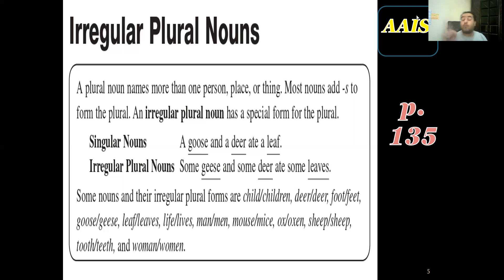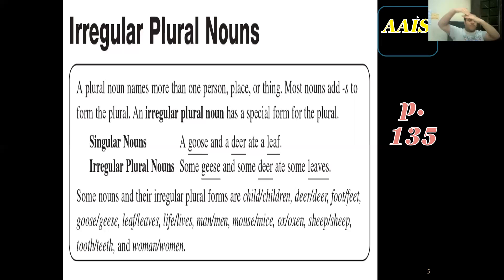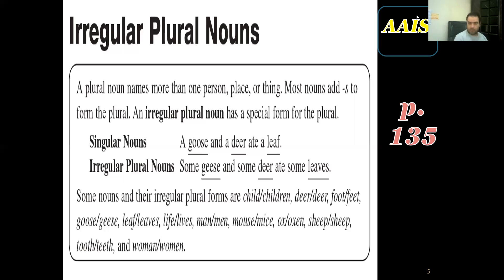However, some words that have a final -f do not change into -ves. For example, 'roof' — like the roof of my house — you just add -s. Similarly, 'a belief' — something that you believe in — you just add -s.